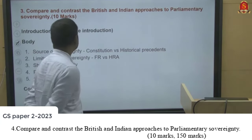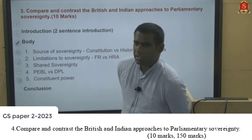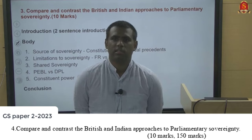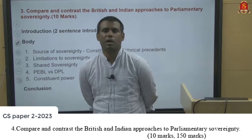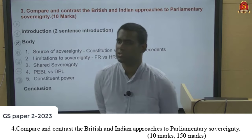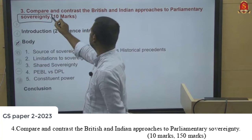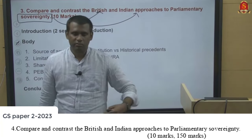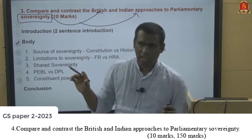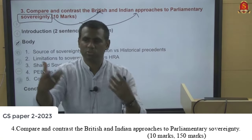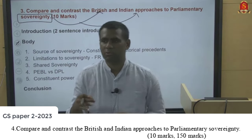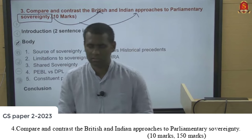The third challenging question asks to compare British and Indian approaches to parliamentary sovereignty — a 10-mark question. Many students mistake it for a general comparison of parliamentary systems. The actual focus is one specific aspect: how powerful are the respective parliaments, what limitations exist, and what is the source of those limitations. Only then can you make an accurate comparison.